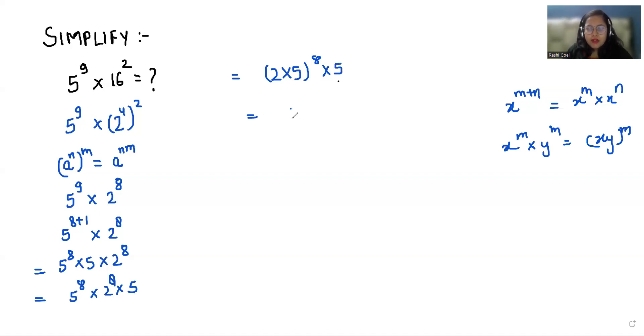So 2 times 5 is 10 whole power 8 times 5. So 5 times 10 power 8. So this is our final answer.